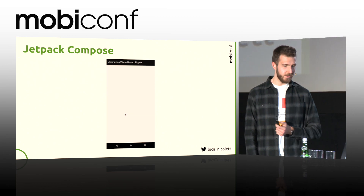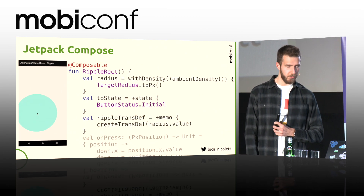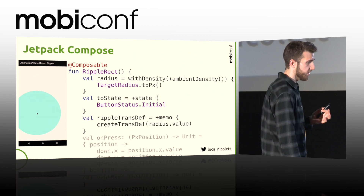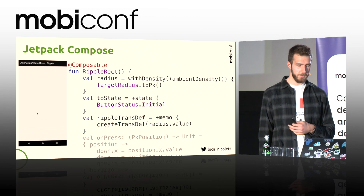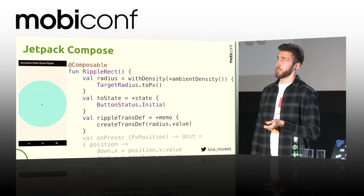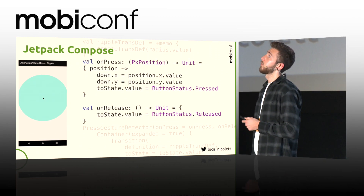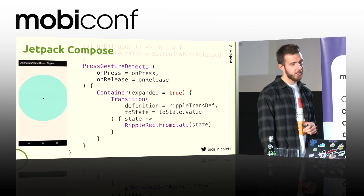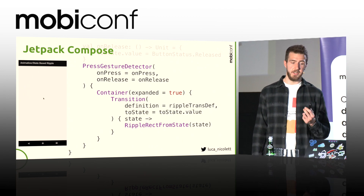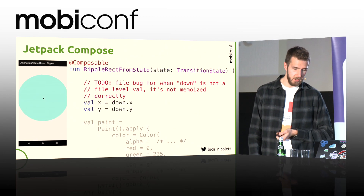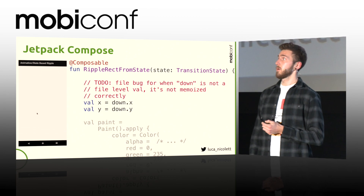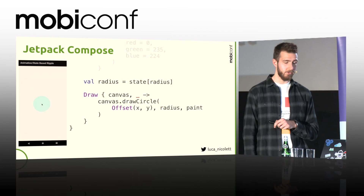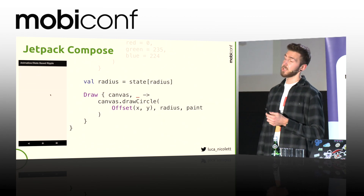onCommit is a lifecycle callback called every time the composition commits — meaning every time the children function listens to a change on any data or model, this onCommit is recalled, so the dialog sets the content every time. Ripples are used almost everywhere — on every single touch that happens on screen. It sets up a radius, a memoization of a radius, a state, and a transition. It then defines two functions, onPress and onReleased, which update the state. It wraps everything into a press gesture recognizer and a transition. The ripple draws from state, obtaining the position of the gesture, sets up a paint to draw on canvas, retrieves the radius from the state, and draws a circle. The animation is done by the radius being updated from the model.